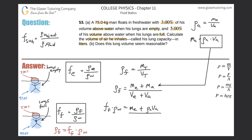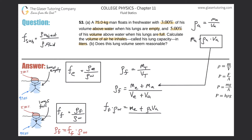We also need the volume of the body when his lungs are empty, which we don't immediately know. Let's see if we can find it. We solve the density formula for the volume of the body when lungs are empty: it equals the mass of the man's body (empty) divided by the density of the body (empty).